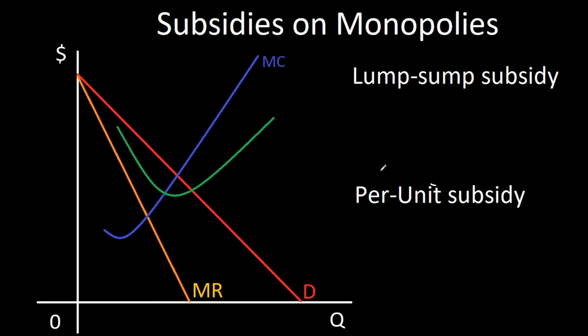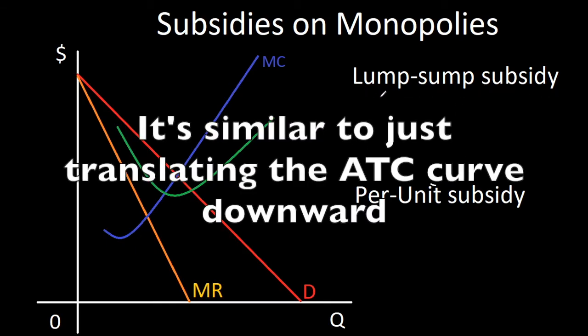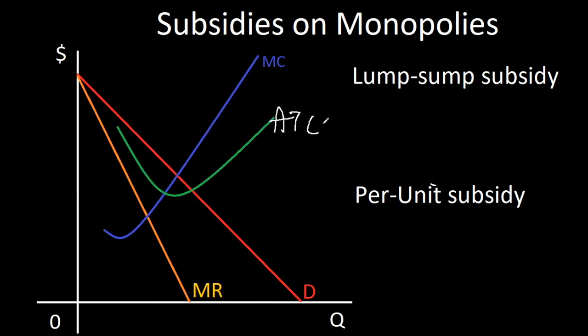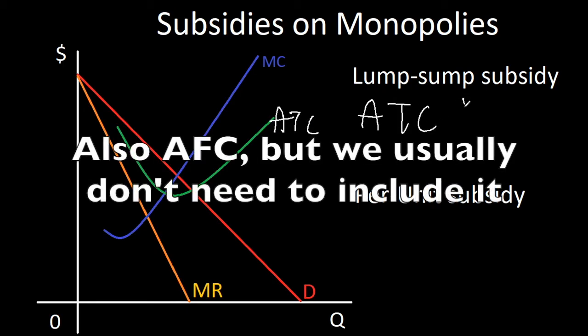Looking at these two types of subsidies, we first have lump sum subsidy. Lump sum is essentially handing a firm cash all at once. This means it affects the fixed cost of the firm. If we remember, ATC will be affected if fixed costs change. Since it's a subsidy, that means your total cost will decrease and so will your average total cost. So lump sum subsidy affects ATC and makes it go downward.